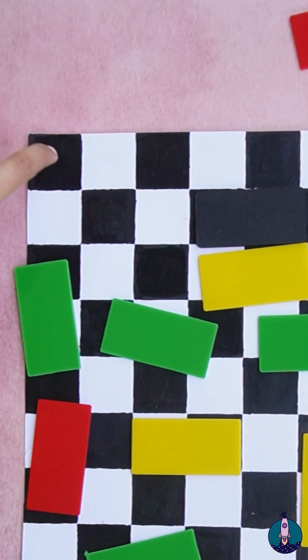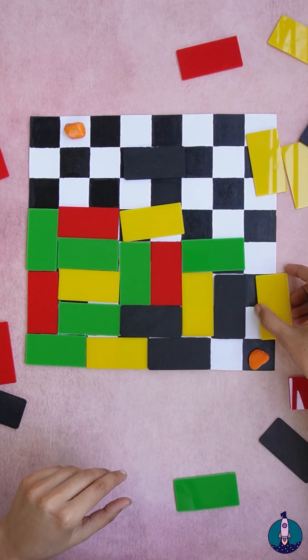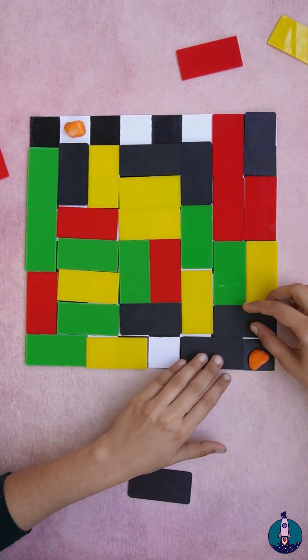Now instead of blocking this, block this and try to cover the rest of the squares with dominoes. It can be solved now.